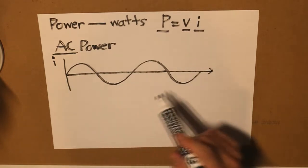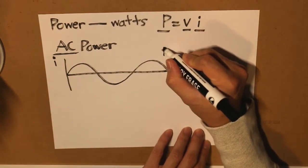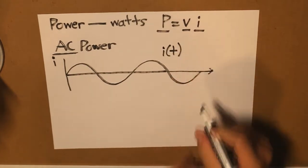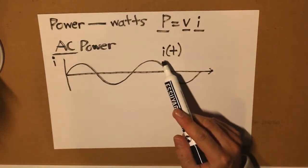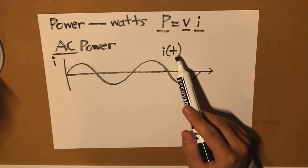And having that sinusoidal wave, our current will vary. And that's why we can define it as I(t).